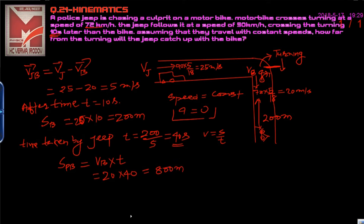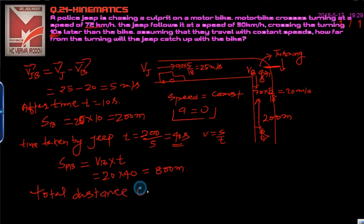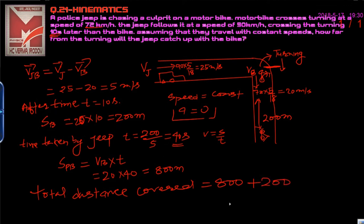The total distance from the turning where the jeep catches the bike is 800 meters plus the initial 200-meter head start, giving a total of 1000 meters, which equals 1 kilometer. This is the final answer.